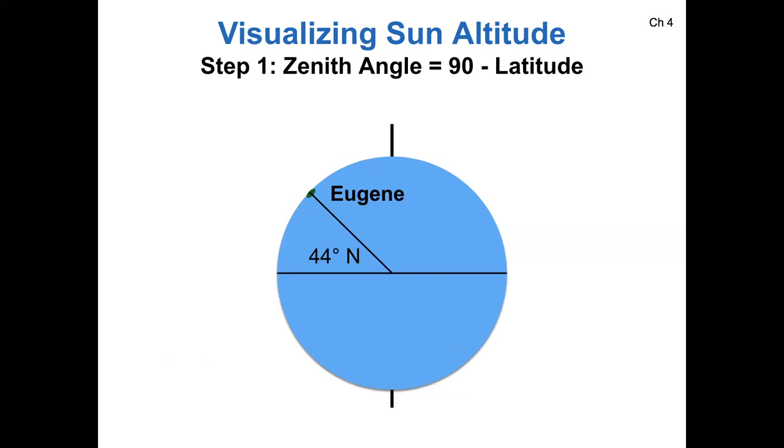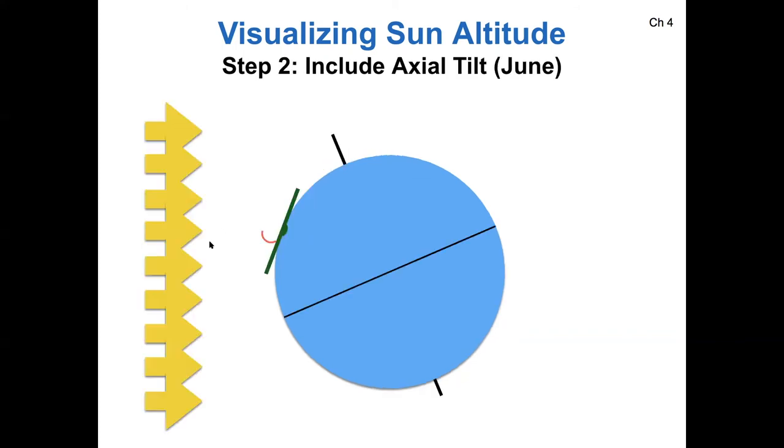So how do we figure out the altitude of the sun for any random latitude? I want to start by finding the zenith angle. The zenith angle and the sun altitude, if you add those together, you get 90 degrees. If I consider the latitude of Eugene, the latitude is 44. If I draw my horizon here, which is parallel to the Earth's surface at that point, and then include the axial tilt of the Earth as well.